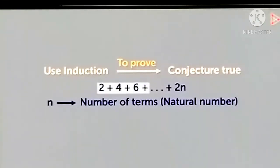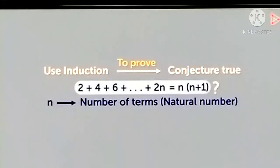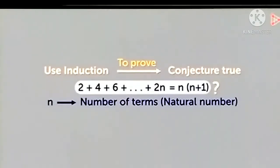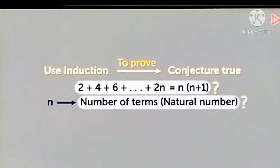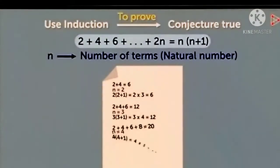This will satisfy condition 2: 2 plus 4 plus 6 up to the last term is 2n, so that must be equal to n(n+1). So it satisfies the formula. Now, how will you prove this? The number of terms — that is, a natural number — you want to prove that the left side is equal to the right side.